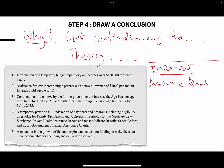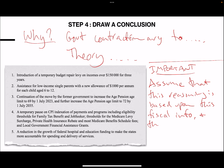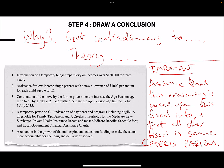Also importantly, assume that this reasoning is based upon this fiscal data and fiscal information, and that all other fiscal policy is the same - in other words, assume Ceteris Paribus as it relates to the fiscal position. Don't just say 'assuming Ceteris Paribus' or 'everything else in the economy today is the same.' Be specific on your Ceteris Paribus: assume that this reasoning is based upon the fiscal info in front of us and all other fiscal is the same, Ceteris Paribus.